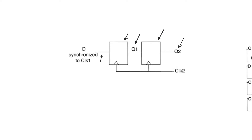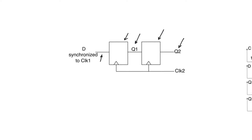We need to understand two things: first, why the data at Q2 is not going to be metastable, and second, how this can be used to transmit data on buses, because it's not a trivial issue.